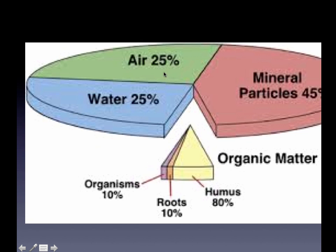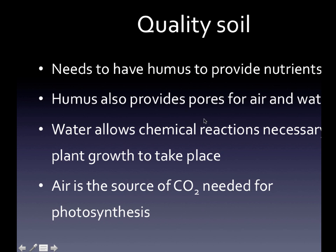Air and water exist in soils in the pores. If you think about your skin, you have pores on your skin, which is where you sweat and where your hairs come out. Pores in the soil are very similar — just little holes in soil where our air can seep in and our water goes in. To have quality soil, we need to have humus to provide those nutrients. This humus is our organic material, once-living material, and it also provides pores for air and water.